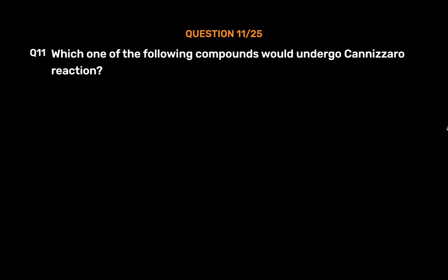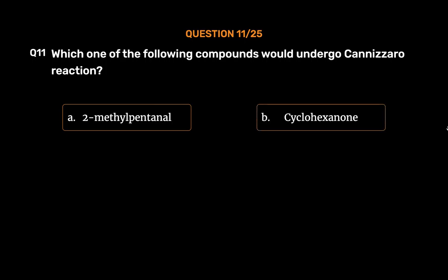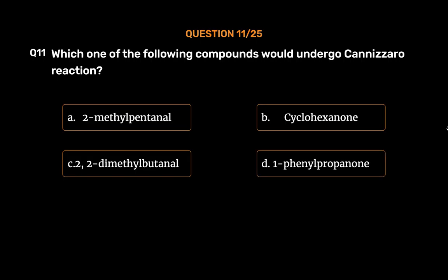Question number 11. Which one of the following compounds would undergo Cannizzaro reaction? Option A, 2-methylpentanal; Option B, cyclohexanone; Option C, 2,2-dimethylbutanal; Option D, 1-phenylpropanone. The correct answer is Option C, 2,2-dimethylbutanal.